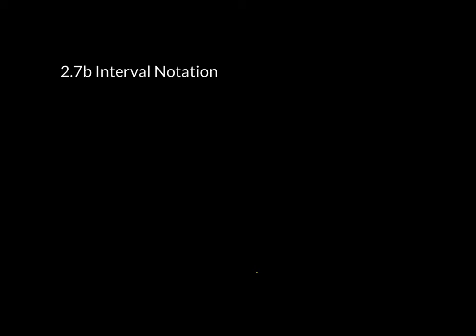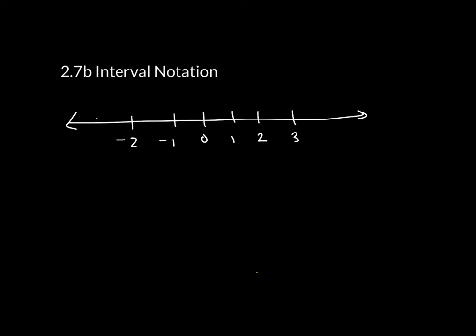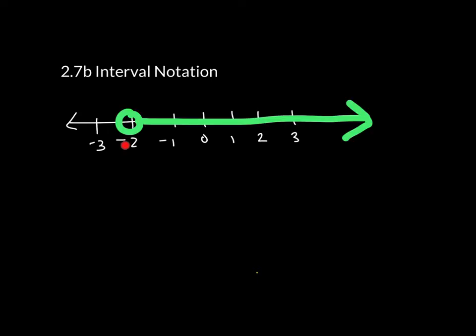Interval notation is a way of taking a graph of a number line and writing the solution to it with just numbers. So if I have a graph that looks like this, with 0, 1, 2, 3, negative 1, negative 2, negative 3. What you're looking at is both where does the graph start and where does the graph end.